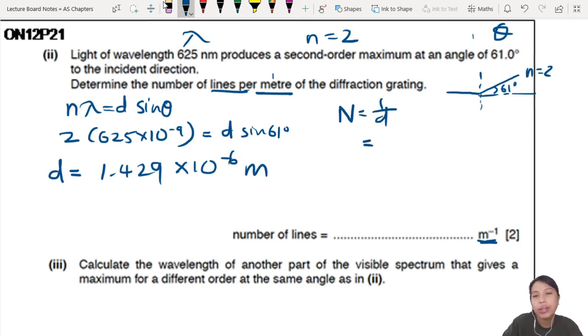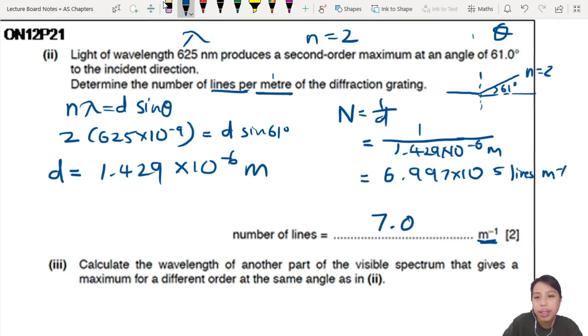So to find lines per meter, you could call it your N, I guess, that would be 1 over D. So you're doing the reverse of what you usually do for MCQs. So 1 over 1.429 times 10^-6 meter, you get meter inverse. So you're going to get something like 6.997 times 10^5 lines per meter. If I'm rounding off to 2SF or 3SF, I get 7.00 or 7.0 times 10^5. Two marks. One from your diffraction equation, one from your final answer.